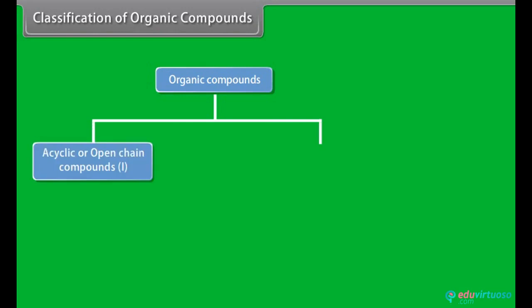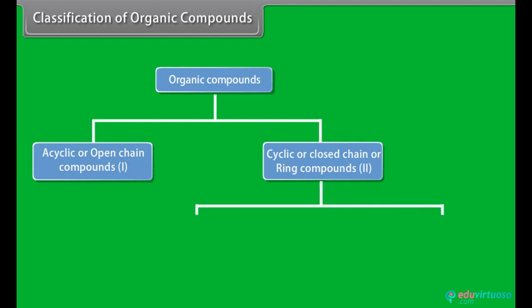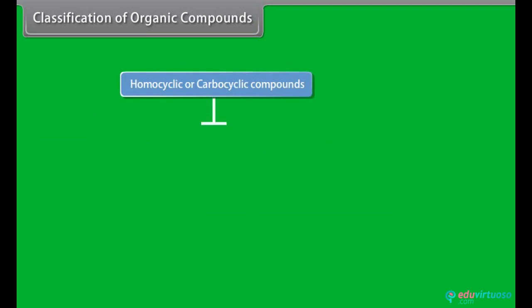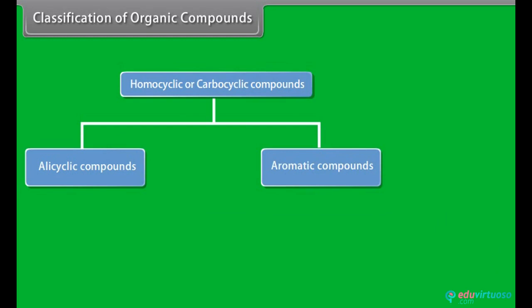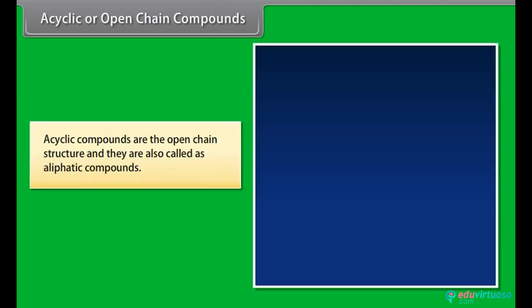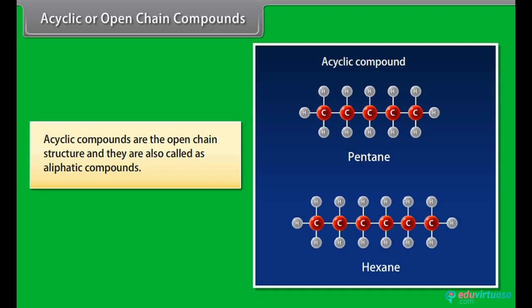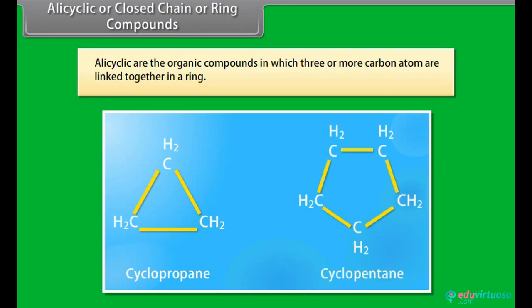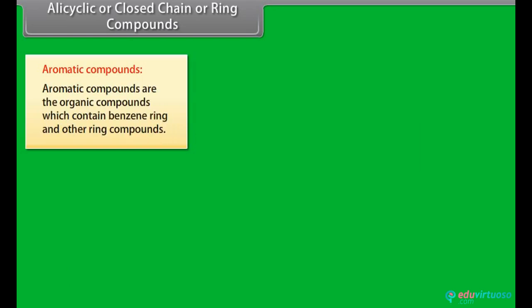Classification of organic compounds: organic compounds can be grouped into acyclic or open-chain compounds and cyclic or closed-chain or ring compounds. Cyclic compounds can be further divided into homocyclic or carbocyclic compounds and heterocyclic compounds. Homocyclic can be further divided into benzenoid and non-benzenoid compounds. Acyclic compounds are the open-chain structures and are also called aliphatic compounds. Alicyclic compounds are organic compounds in which three or more carbon atoms are linked together in a ring.